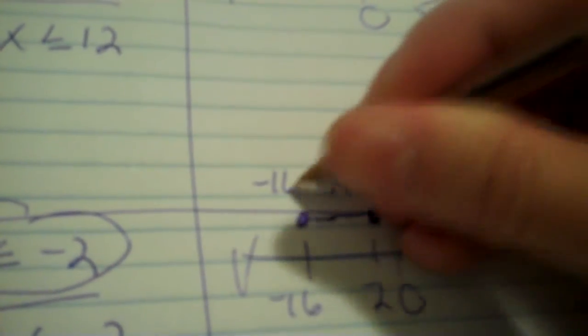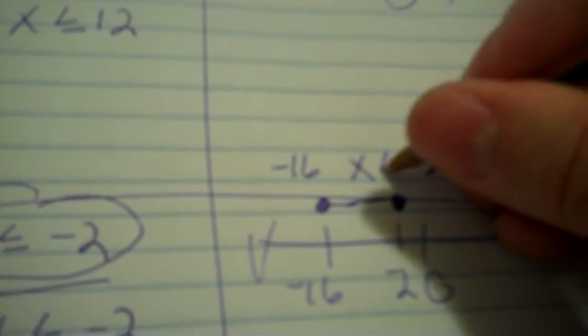So that means x can be any number in that range right there. So x, negative 16, negative 2. Always eat the maximum, never eat the minimum. Okay, then the last one, we got negative 5, less than or equal to x, less than or equal to 17.